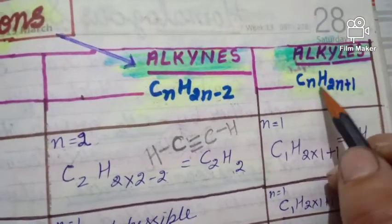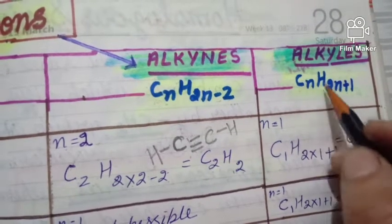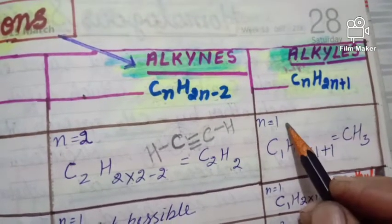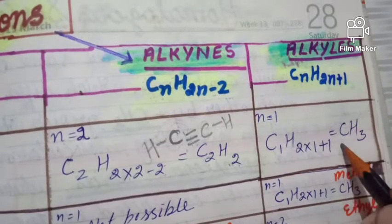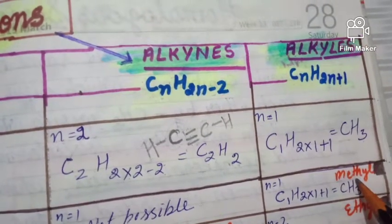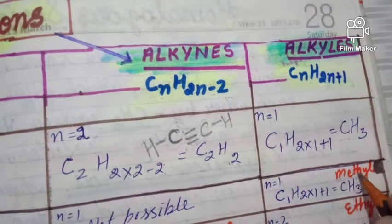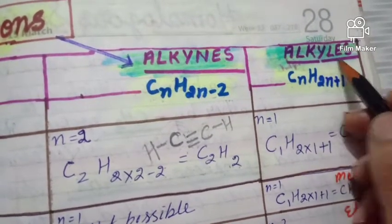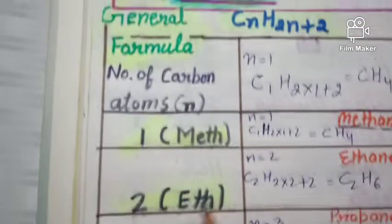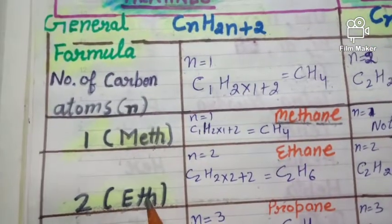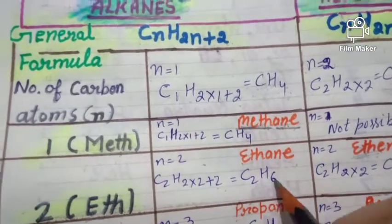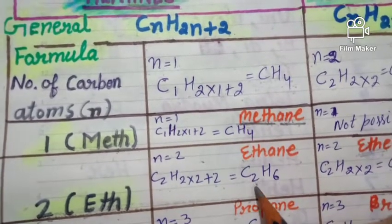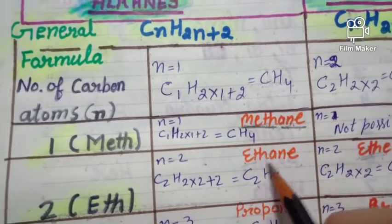Now for alkyls, the general formula is CnH2n+1. Putting n = 1: C1H(2×1+1) = CH3. Since one carbon is present, the root word is 'meth,' and the suffix for alkyls is '-yl,' so the name is methyl. For n = 2: C2H(2×2+1) = C2H5; root word is 'eth,' suffix '-yl,' so the name is ethyl.